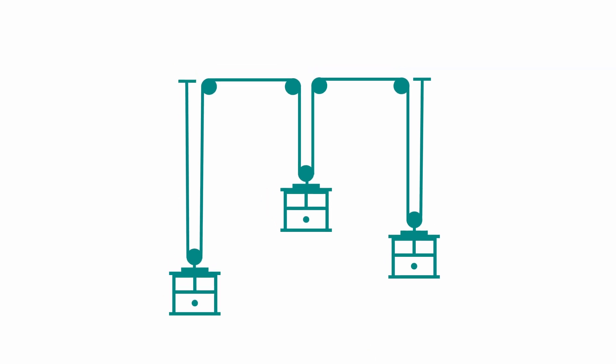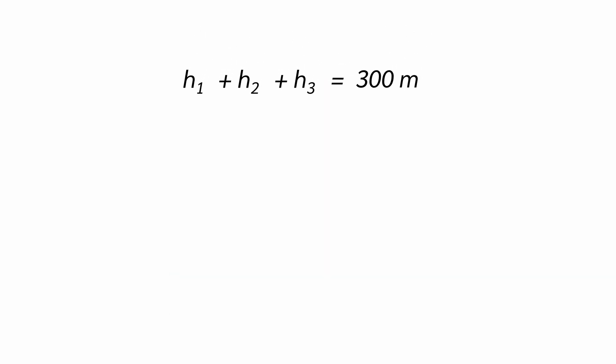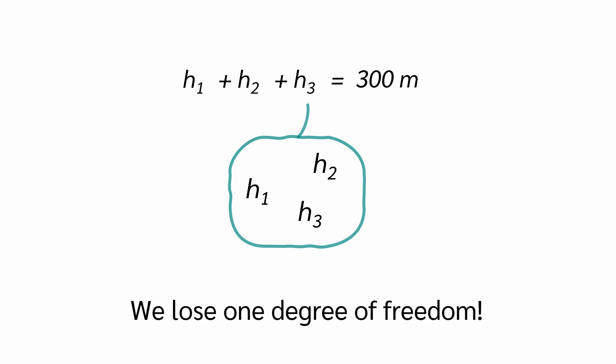But of course, we can also write this constraint mathematically. If we measure each car's height from the ground, the sum of their heights is constant. For example, h1 plus h2 plus h3 might always add up to 300 meters. Because one equation ties h1, h2 and h3 together, we lose one degree of freedom.